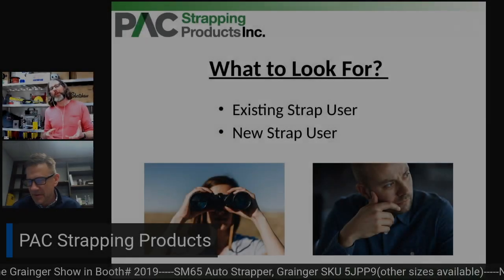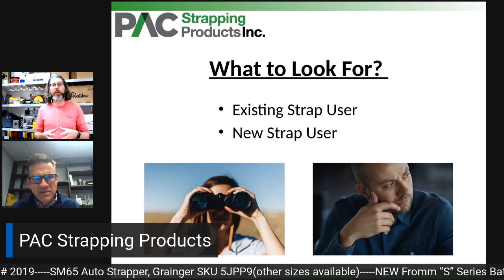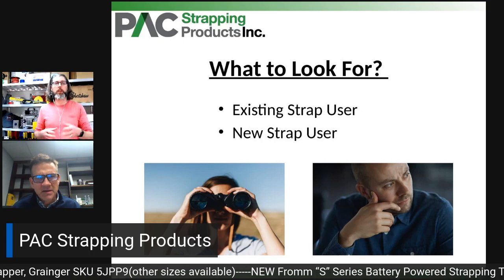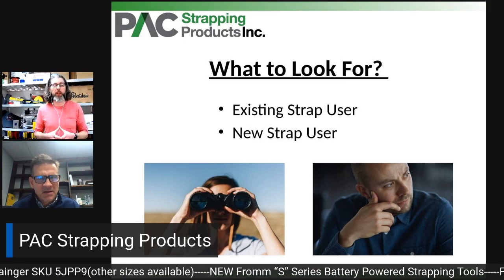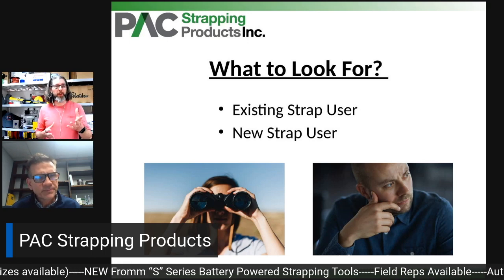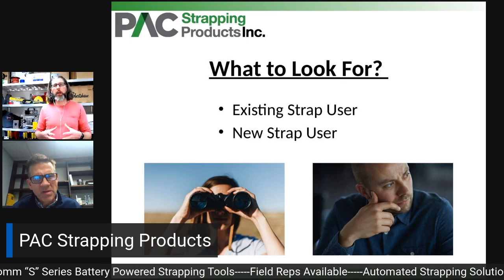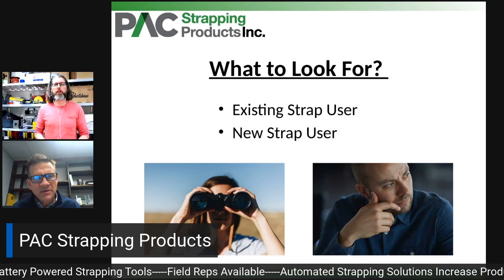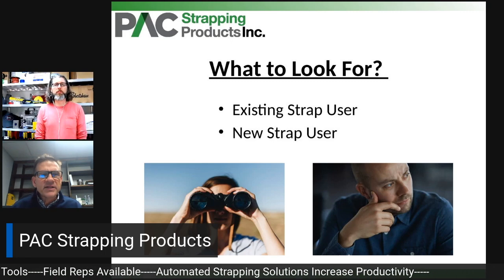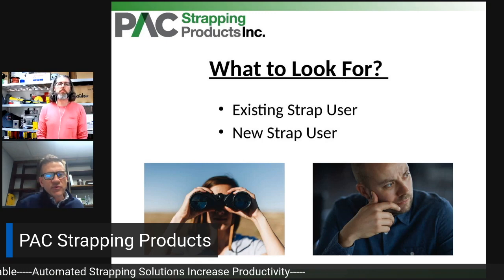When a Grainger account manager is walking into a facility — say a manufacturing facility — or talking to their government customers or healthcare, what should they be looking for in order to talk to them about your products? I kind of break that down into: are they an existing Strap user or are they a new Strap user?